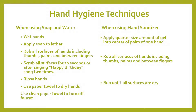When using hand sanitizer, apply a quarter-size amount of gel into the center of the palm of one hand. Rub all surfaces of your hands including your thumbs, palms, and between your fingers. Rub until all surfaces are dry.